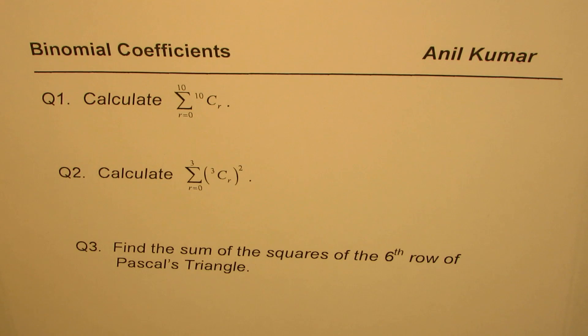The first one is calculate 10 choose r where r goes from 0 to 10. Question number two is calculate square of 3 choose r where r is from 0 to 3. And question number three is find the sum of squares of the 6th row of Pascal's triangle.